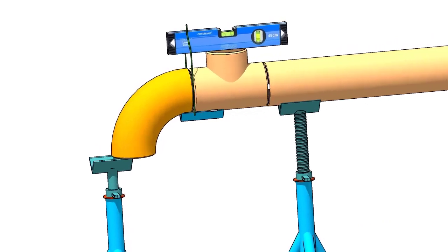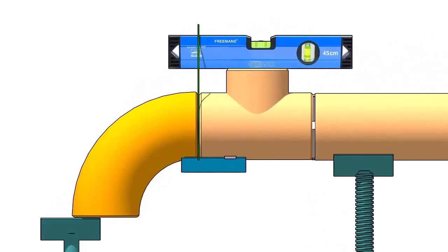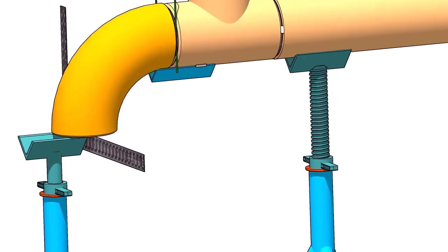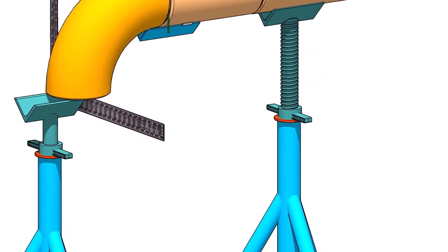Hold a large right angle or a straight edge below the elbow face firmly. Put a level bottle on the right angle as shown. Rotate the elbow to make the face level.